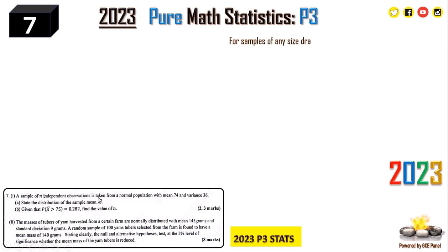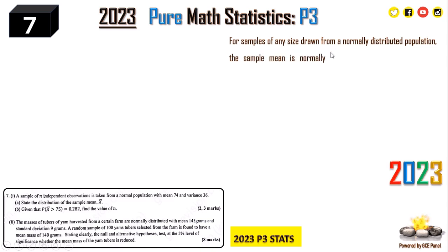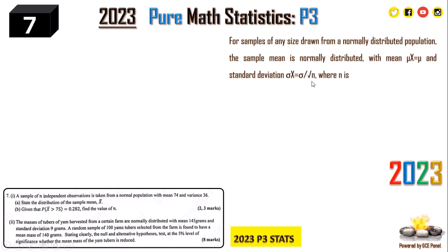Sub-1 part (a): A sample of n independent observations is taken from a normal population with mean 74 and variance 36. State the distribution of the sample mean X̄. For samples of any size drawn from a normally distributed population, the sample mean is normally distributed with mean mu and standard deviation equal to the population standard deviation divided by root n. So X̄ has mean equal to mu, the population mean, which is 74.